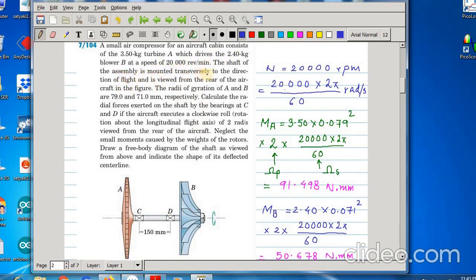The shaft of the assembly is mounted transversely to the direction of flight. The shaft is transversely fitted in the direction of flight that means the flight is going inside the paper - that means the aircraft direction of motion is inside the paper. The shaft of the assembly is mounted transversely to the direction of flight and is viewed from the rear of the aircraft in the figure. That means the aircraft is moving from us to the inside of the paper.